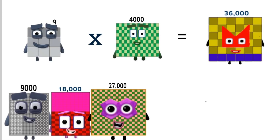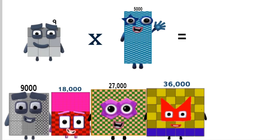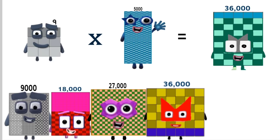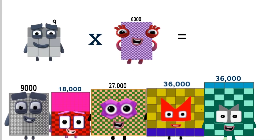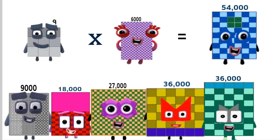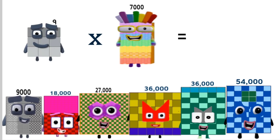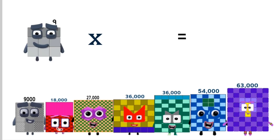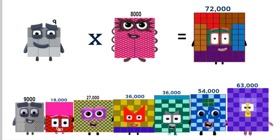Times 4,000 equals 36,000. Times 5,000 equals 45,000. Times 6,000 equals 54,000. Times 7,000 equals 63,000. Times 8,000 equals 72,000.